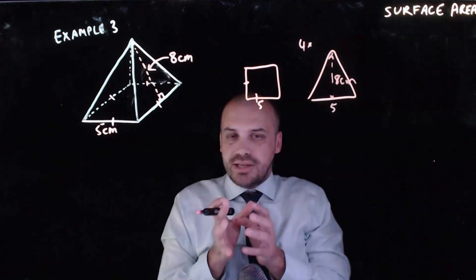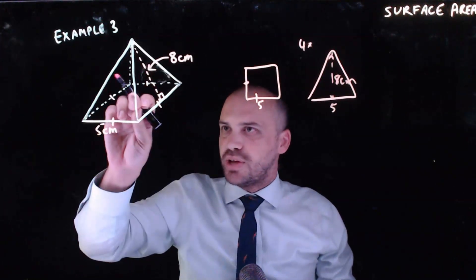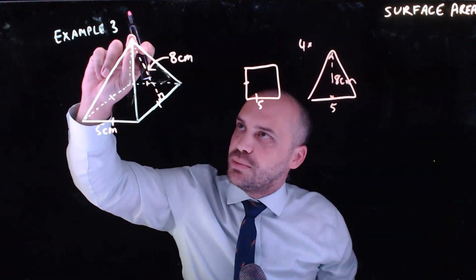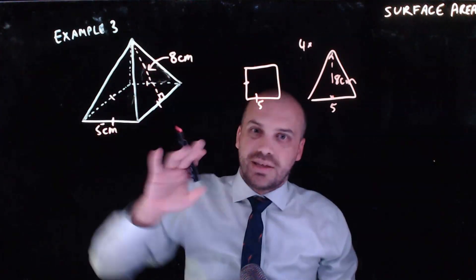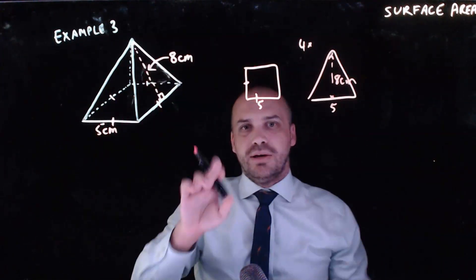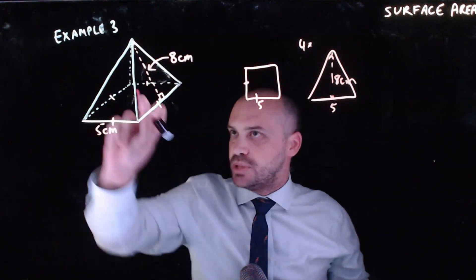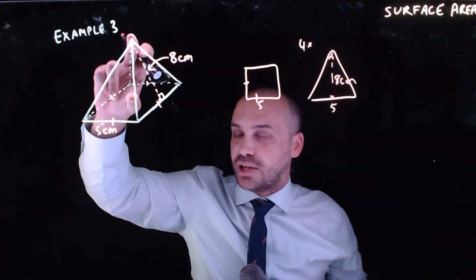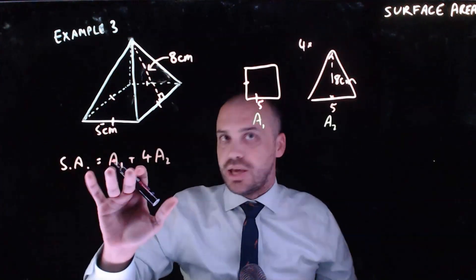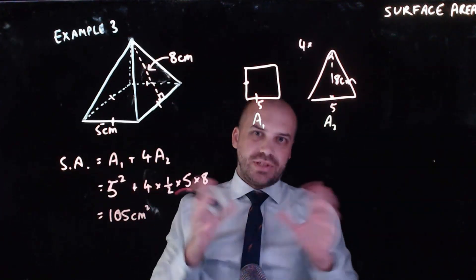I say we're getting really lucky here because they could have told us the height from the top to here, in which case we would have had to use some Pythagoras to try to come up with this length here. They could have told us the length from here down this edge here, and again we would have had to use Pythagoras to come up with some way to find this length here. But because we're being told the actual length of that triangle we're in business. Just be careful with pyramids because sometimes they'll give you a measurement like the actual height or this length right here and that'll trick you up. So of course it's going to be equal to area 1 plus 4 times area 2. And that gives us 105 cm squared.